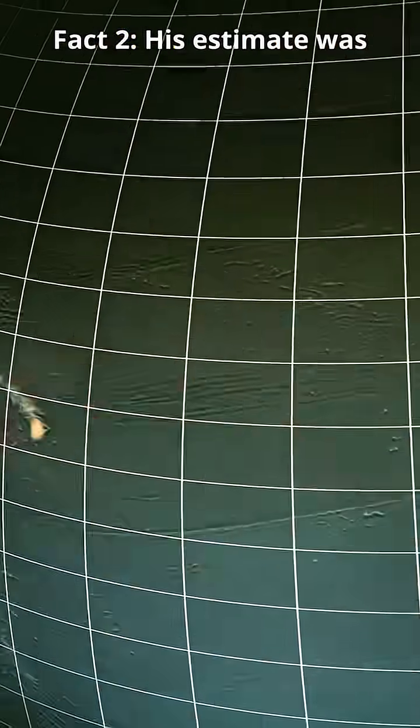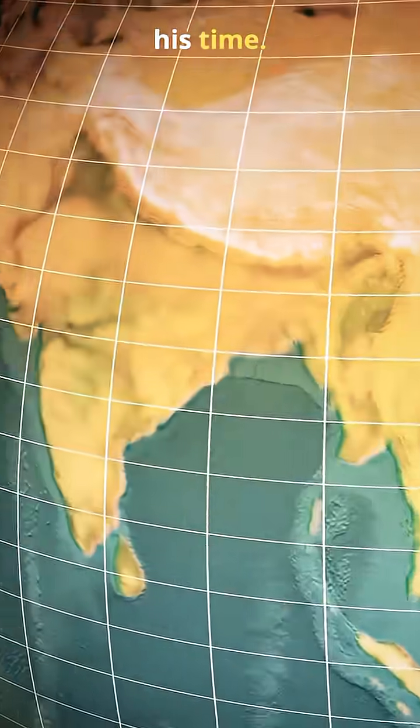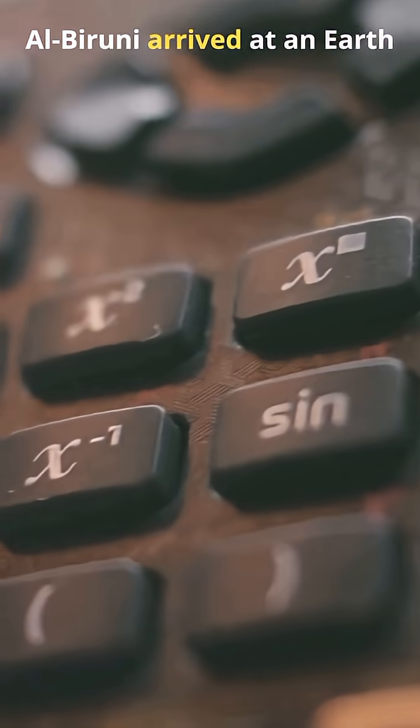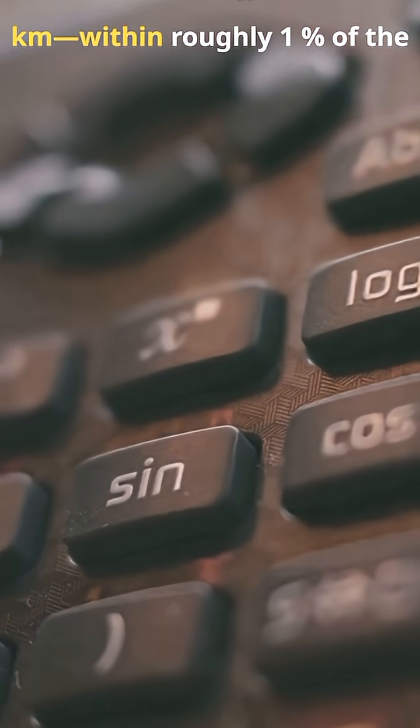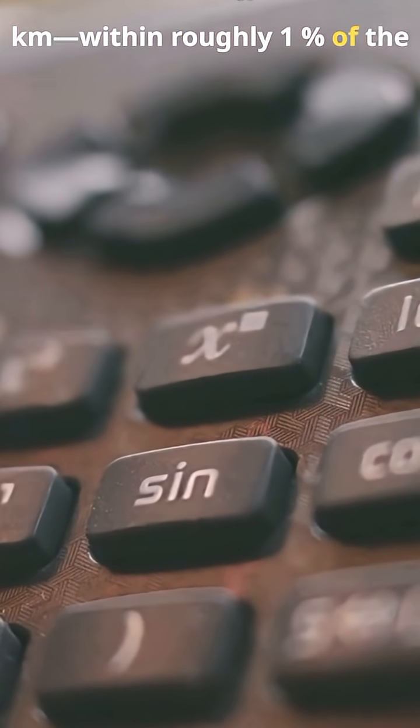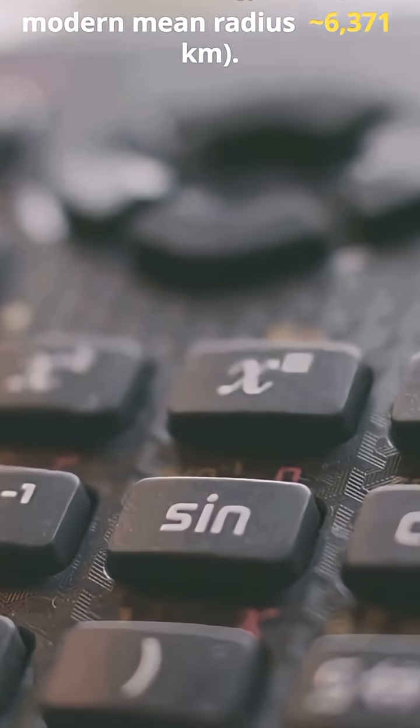Fact two: his estimate was extraordinarily accurate for his time. Al-Biruni arrived at an earth-radius of about 6,340 km, within roughly 1% of the modern mean radius, 6,371 km.